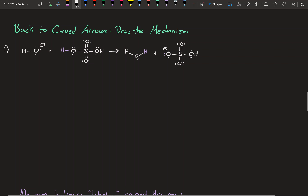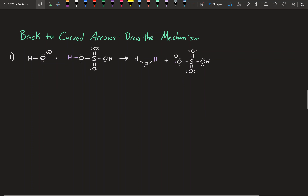At any point you want to pause the videos and try them before you see me do them, feel free. You can always do that, or you can watch me and then do the practice on the review problem set. So let's get started. For the first example, I've labeled the hydrogen — you can see we label the hydrogen purple over here — so you kind of know where the hydrogen is going.